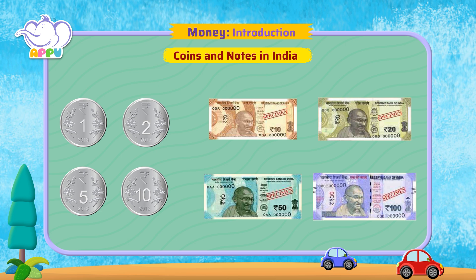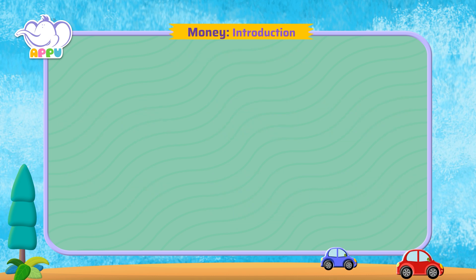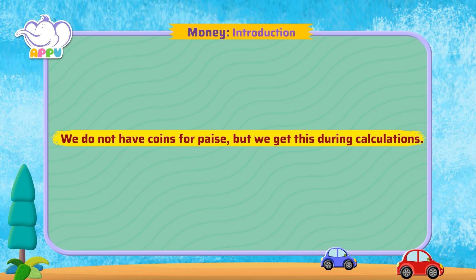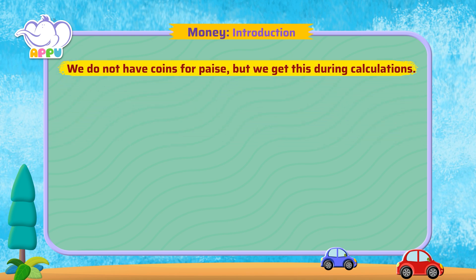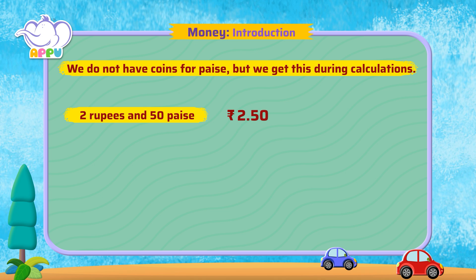Perfect! We do not have coins for paise, but we get this during calculations. For example, 2 rupees and 50 paise is written as 2.50. This is the symbol used for rupees. While writing, rupees and paise are separated by a dot.